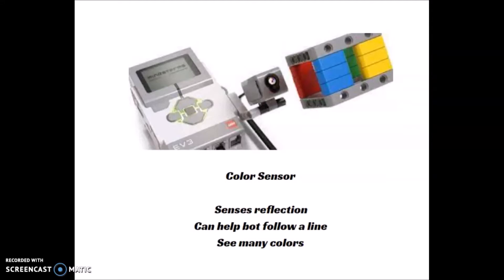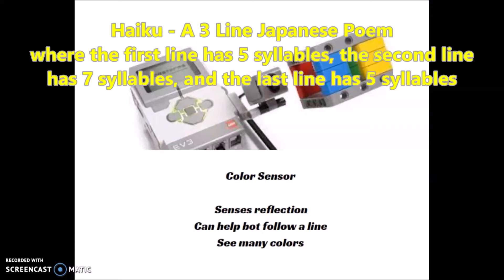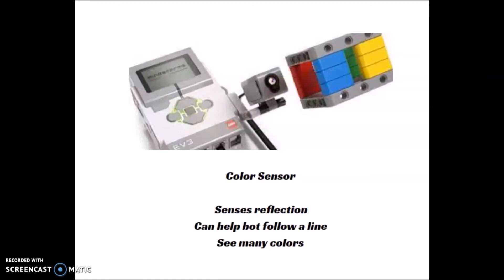Let's start with how robotics can fit into language arts. Let's take a look at what a haiku is. For those of you that don't know, it's a three-line Japanese poem where the first line has five syllables, the second line has seven syllables, and the last line has five syllables. So I wrote a haiku about the color sensor.